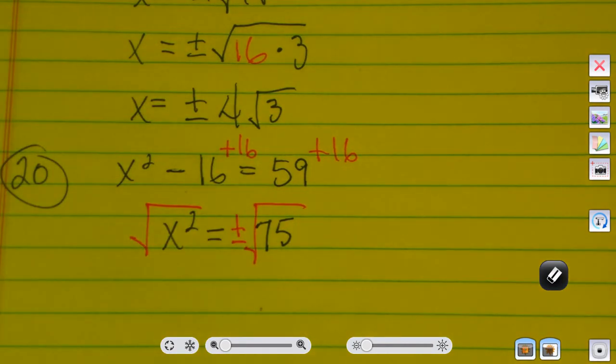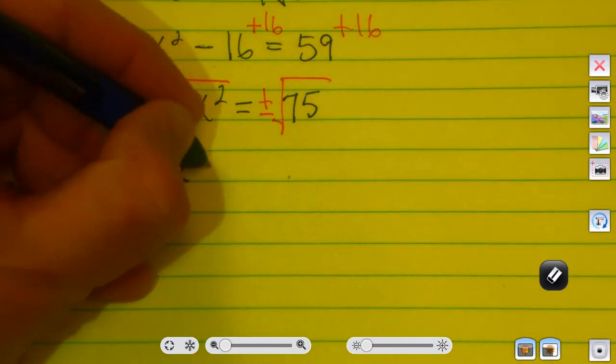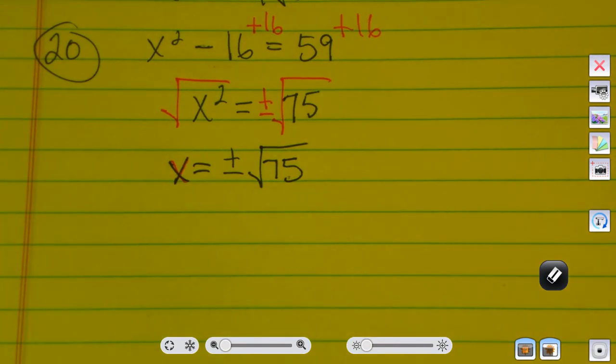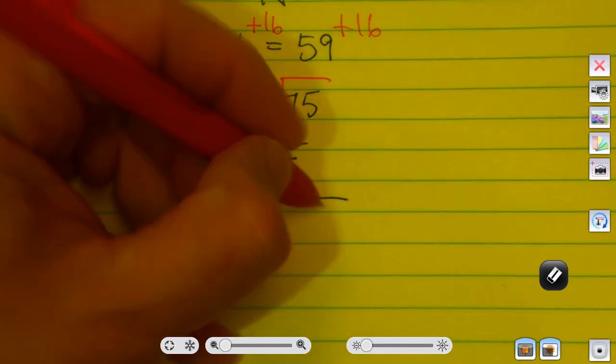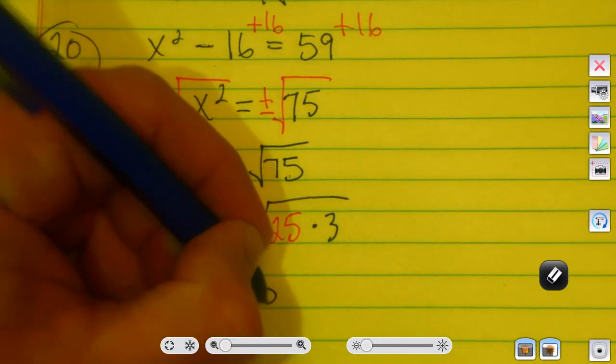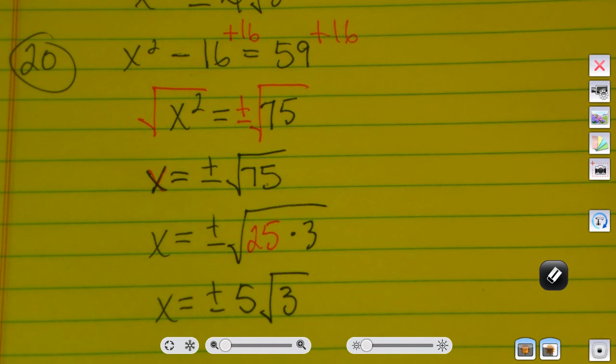Take the square root of both sides. Remember, my result will be positive and negative. That means x will be equal to plus or minus radical 75. But we've already determined that 75 is divisible by 25. The way I remember that is there's 3 quarters in 75 cents. So I could rewrite that as x is equal to plus or minus radical 25 times 3. Square root of 25 is 5, so it's plus or minus 5 radical 3. Even if my answers are not perfect squares, I can still take the square root of both sides and simplify that answer by simplifying the radical.